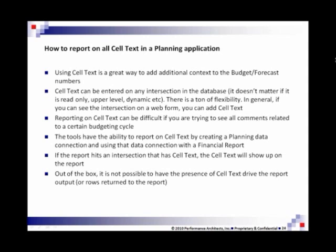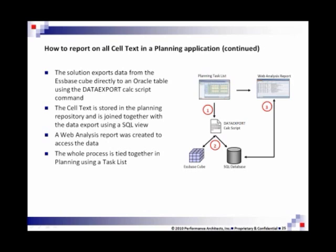We're going to show a way to get around that and solve this problem. The solution actually uses a data export from Planning directly into a relational table. If you're familiar with the data export function, this export could be slow. What you're doing is exporting all levels in the database, and not only that, all dynamic members as well — those are options in the data export that you can use. Just be mindful that if it's not sample basic that you're working with, it could be slow, so this would probably be a weekly or maybe a monthly process.